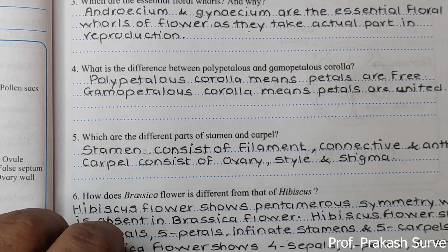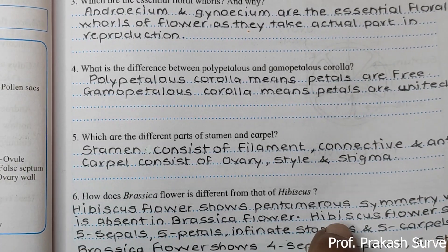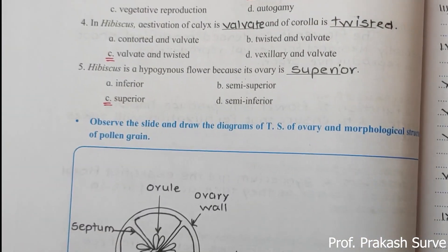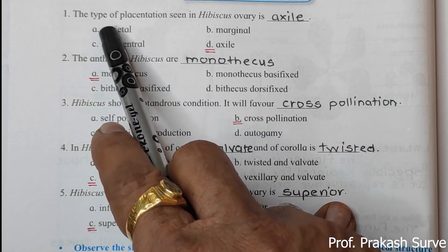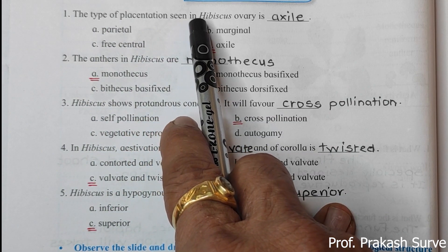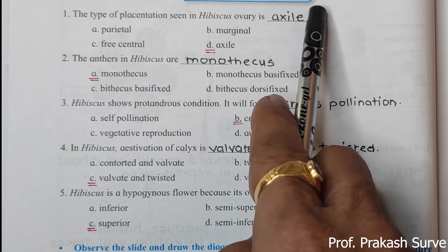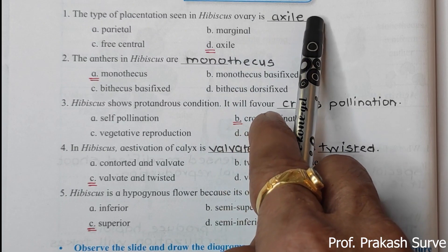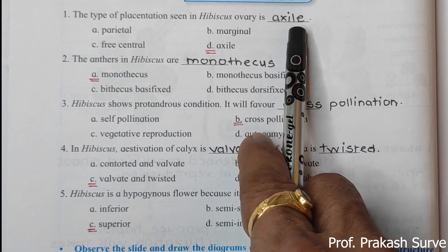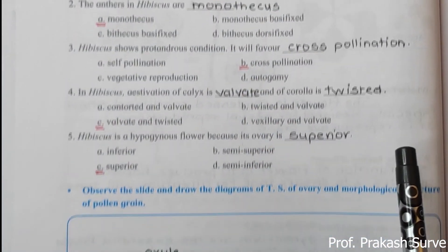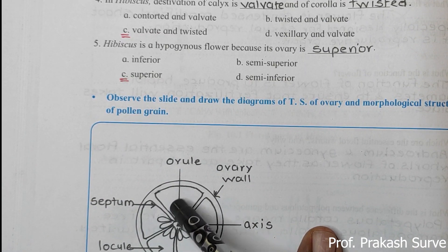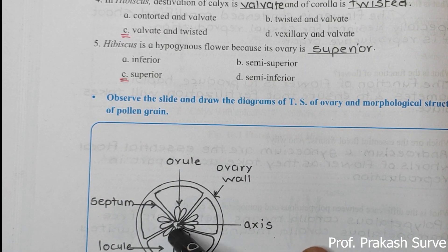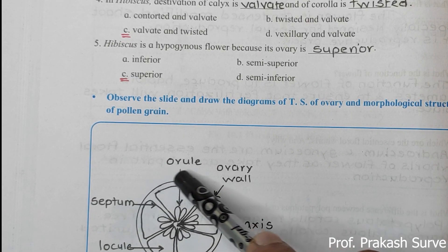Now we'll go to the MCQ section. The type of placentation seen in the hibiscus ovary is axile placentation. This is because all ovules are attached to the axis. In the diagram we observe that all ovules are attached to the axis — that is called axile placentation.